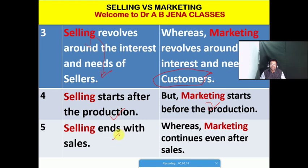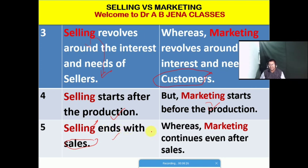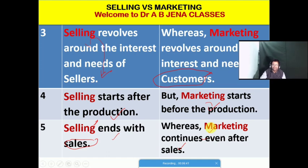The next basis of comparison is: selling ends with sales. So selling has a very limited scope. Whereas the scope of marketing is broad and comprehensive, and marketing continues even after the sales. Warranty, guarantee, after-sale services, and other aspects will be taken into consideration in the case of marketing.